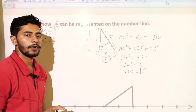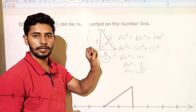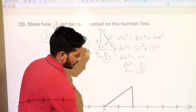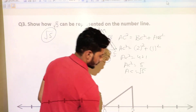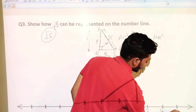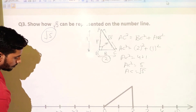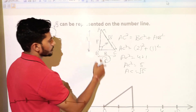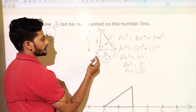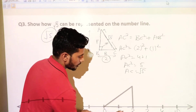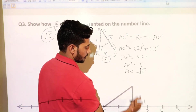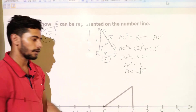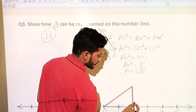So the length of the hypotenuse is square root of 5. Now we place this length on the number line. First, draw a number line with points 0, 1, 2, 3, 4, 5, minus 1, minus 2, minus 3, minus 4 and so on. Take point B at 2 units as the base BC with 2 units. Then at point B, make a 90 degree angle using a protractor, and draw a perpendicular of 1 unit.